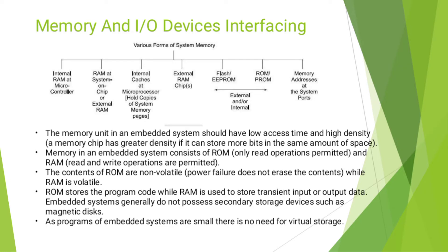ROM stores the program code, while RAM is used to store transient input or output data. Embedded systems generally do not possess secondary storage devices such as magnetic disk. As programs of embedded systems are small, there is no need for virtual storage.